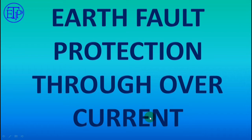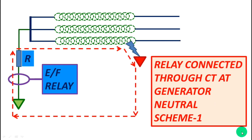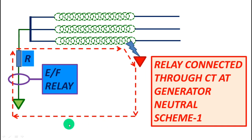Let's see how earth fault protection of generators is employed through overcurrent. This is scheme number 1: relay connected through CT at generator neutral. If this is the generator, here the CT is connected and the earth fault relay is connected to the neutral point. If there is any earth fault, the primary fault current will go as the red arrow shows, and its reflection goes to the earth fault relay and it will pick up to operate.